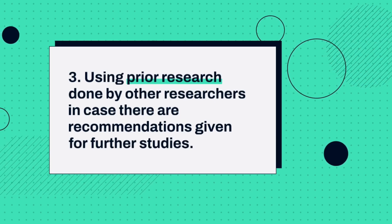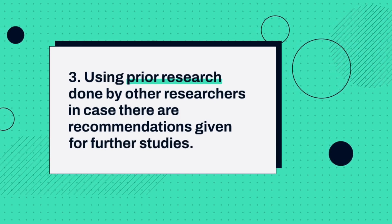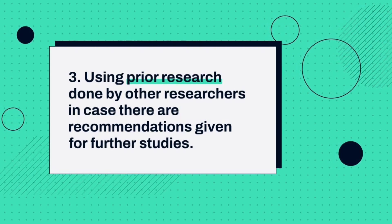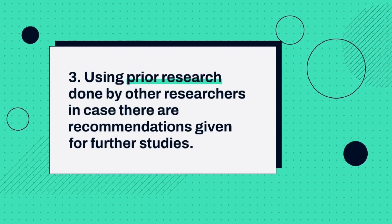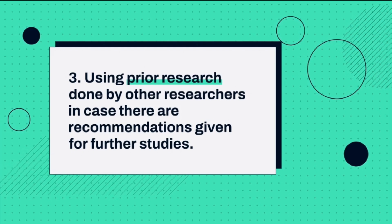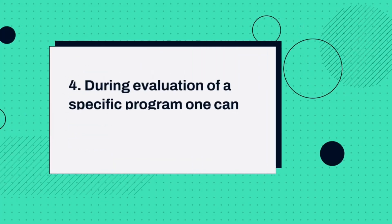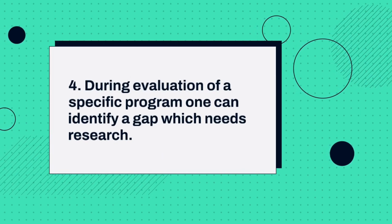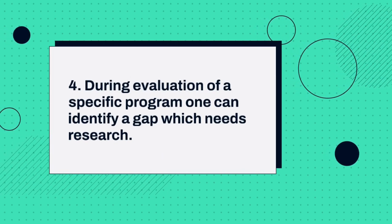Number three is using prior research done by other researchers, especially where there are recommendations given for further studies. Because in any library where you find a research project, the last chapter is always a suggestion for further research. That area may be a source from which you pick and develop a research problem.